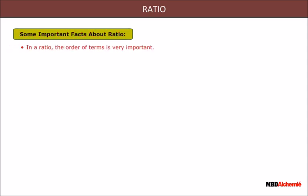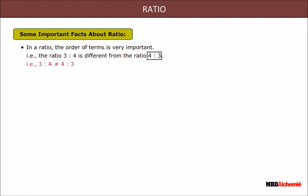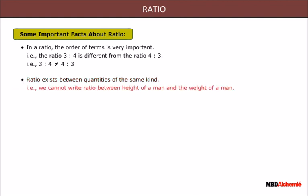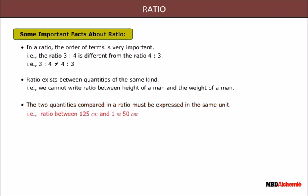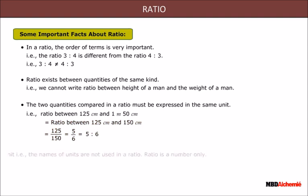Some important facts about ratios: In a ratio, the order of terms is very important — the ratio 3:4 is different from the ratio 4:3, that is 3:4 is not equal to 4:3. Ratio exists between quantities of the same kind; we cannot write a ratio between the height of a man and the weight of a man. The two quantities compared in a ratio must be expressed in the same unit — for example, the ratio between 125 centimetres and 1 metre 50 centimetres equals the ratio between 125 centimetres and 150 centimetres, that is 5:6. Ratio has no unit.